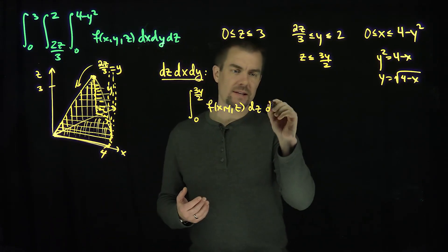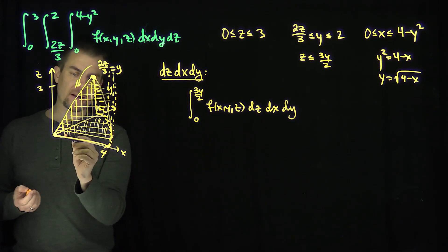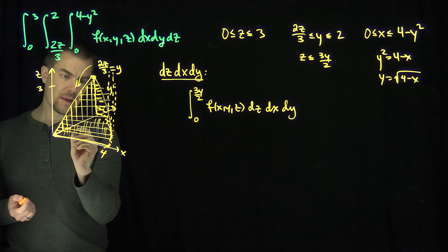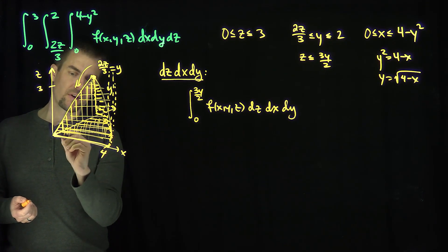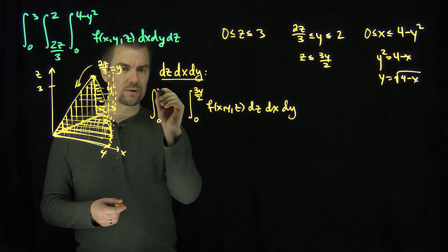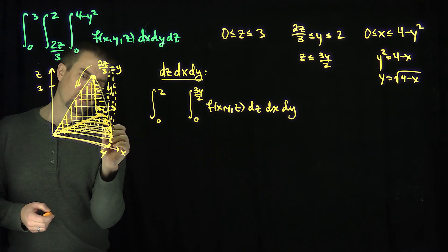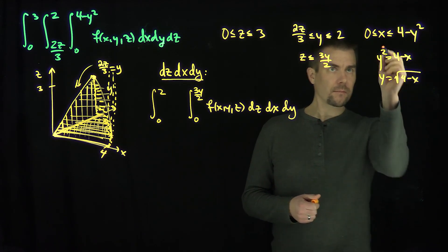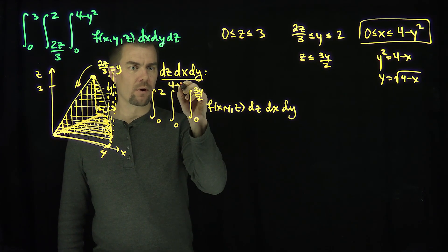Now we need the range for x and y. x goes from 0 up to the curve, and the y values go between 0 and 2. For every y between 0 and 2, x goes from 0 up to 4 minus y squared. So the integral becomes: z from 0 to 3y/2, x from 0 to 4 minus y squared, y from 0 to 2.